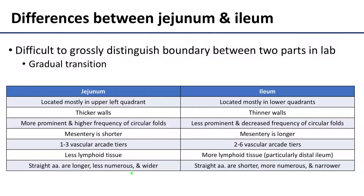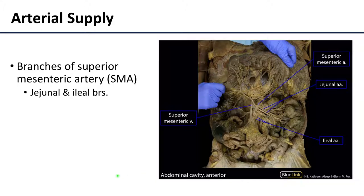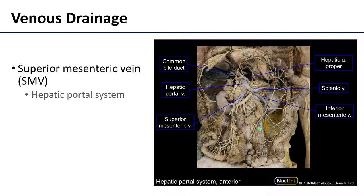The straight arteries of the jejunum are going to be longer and wider, but less numerous than those in association with the ileum. The arterial supply for the jejunum and ileum is solely derived from the superior mesenteric artery, with varying numbers of jejunal and ileal branches forming those arterial arcades. Venous drainage for this portion of the small intestine is strictly into the portal system via the superior mesenteric vein, and remember that the superior mesenteric vein joins with the splenic vein to form the hepatic portal vein, as you can see in this image.